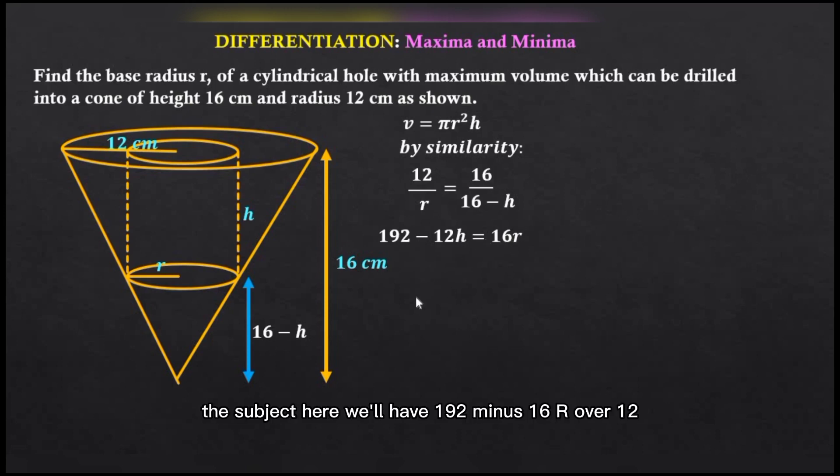Now making h the subject here, we'll have (192 - 16r)/12, and simplifying further, h becomes 16 - (4/3)r.